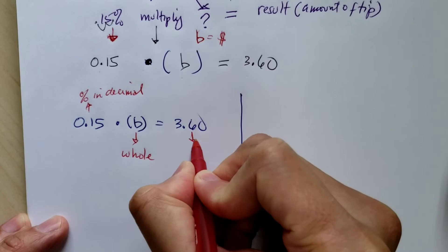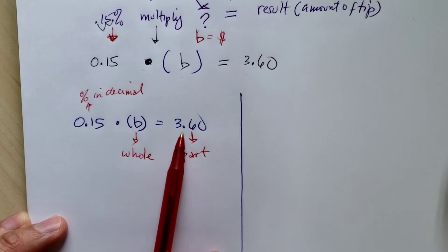We know this is the whole. And we know this is the part. So 15% of the whole gives you $3.60.